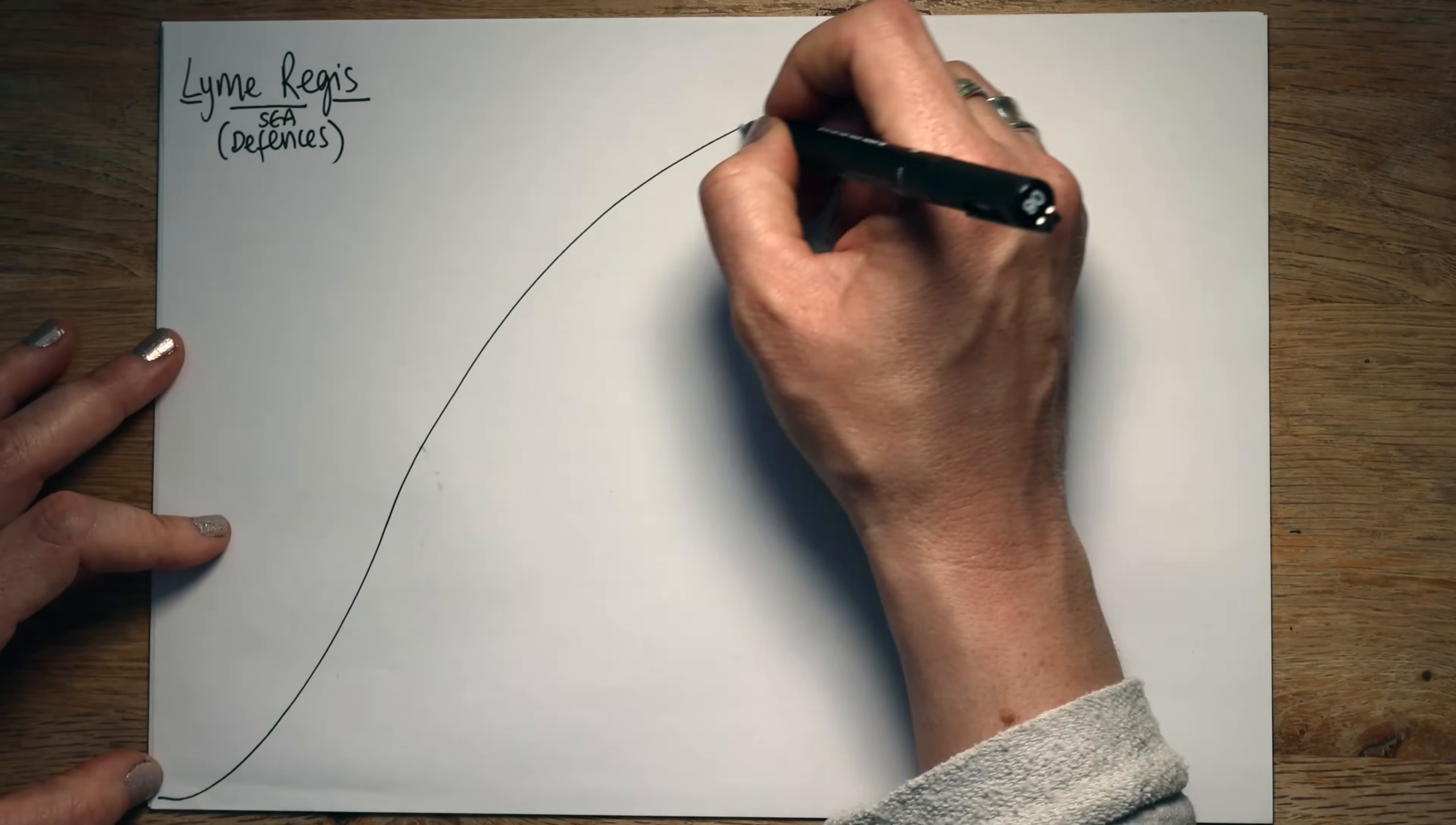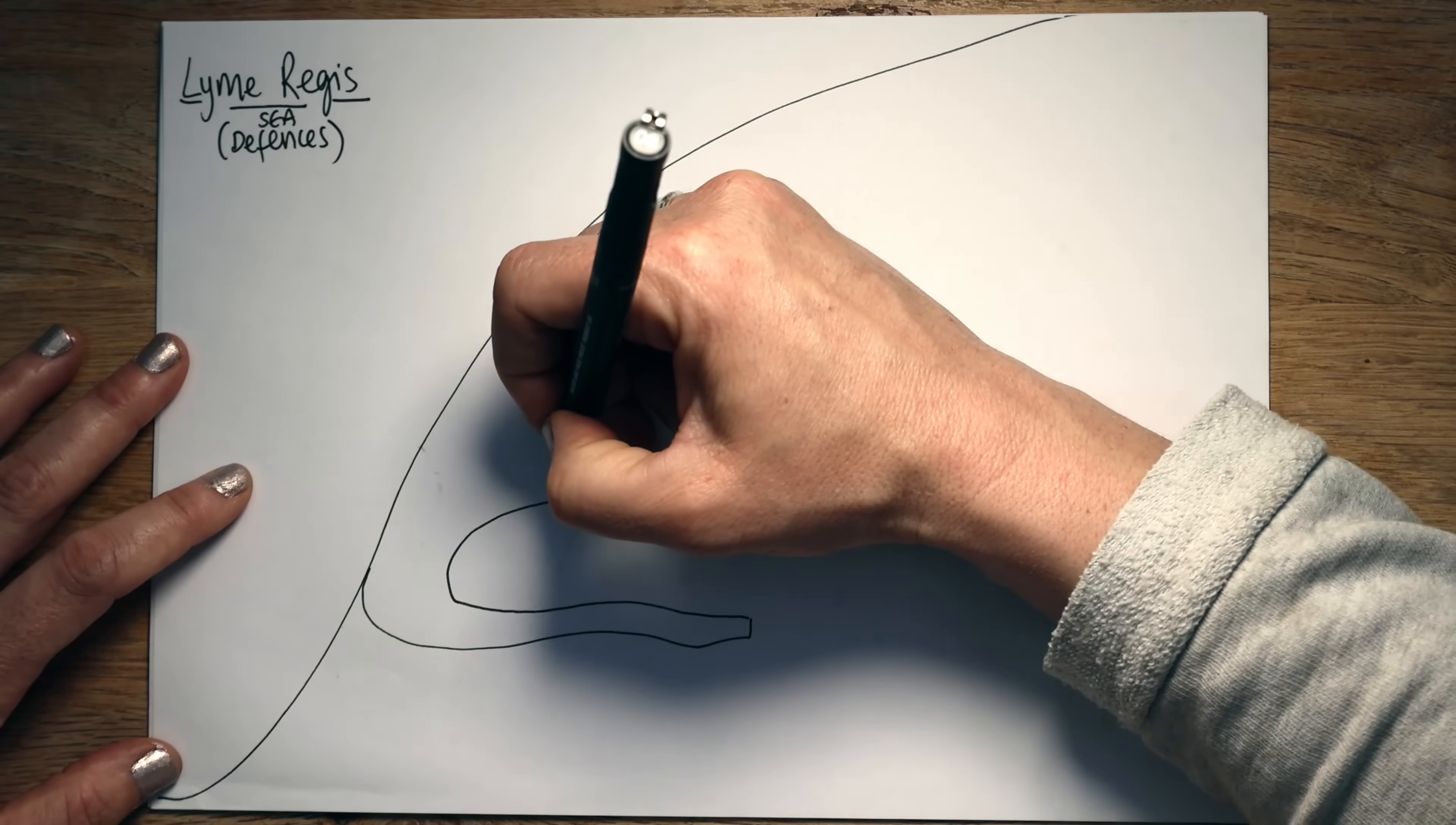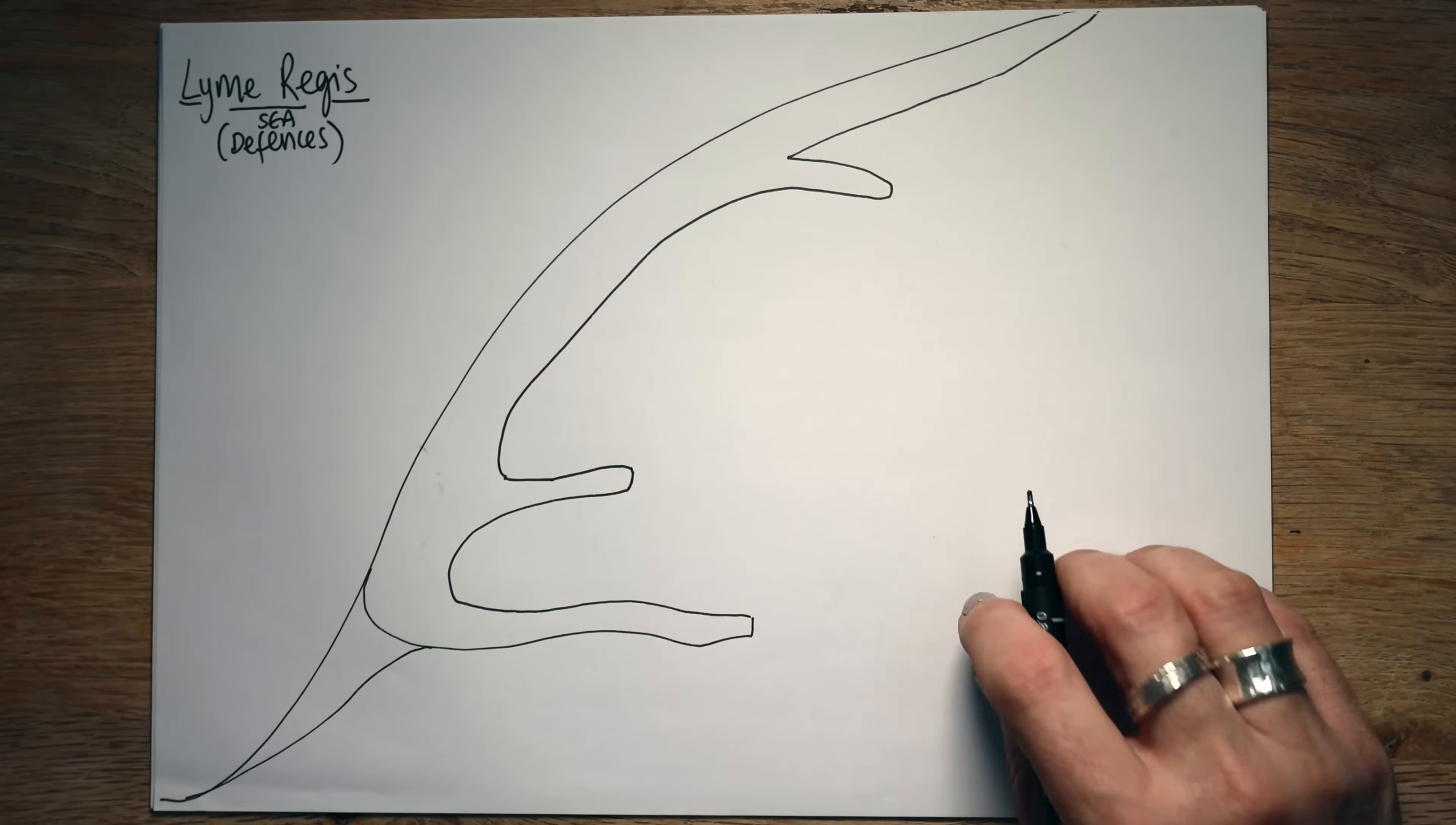So if you draw kind of a coastline like this to start with so you've got a nice curved line across your page and then we're going to pop a few things in so we're going to put our original harbour arm in place. Because it's got quite a lot going on in Lyme Regis, there's a number of different defences in place and I'm going to take it off there. So that way heads off to kind of the cliffs and I'm not going to get into the cliffs too much today.